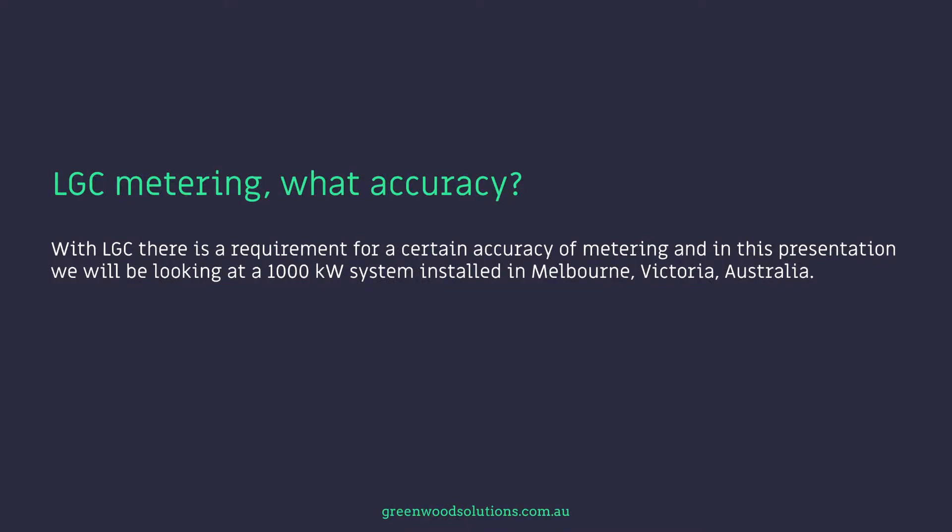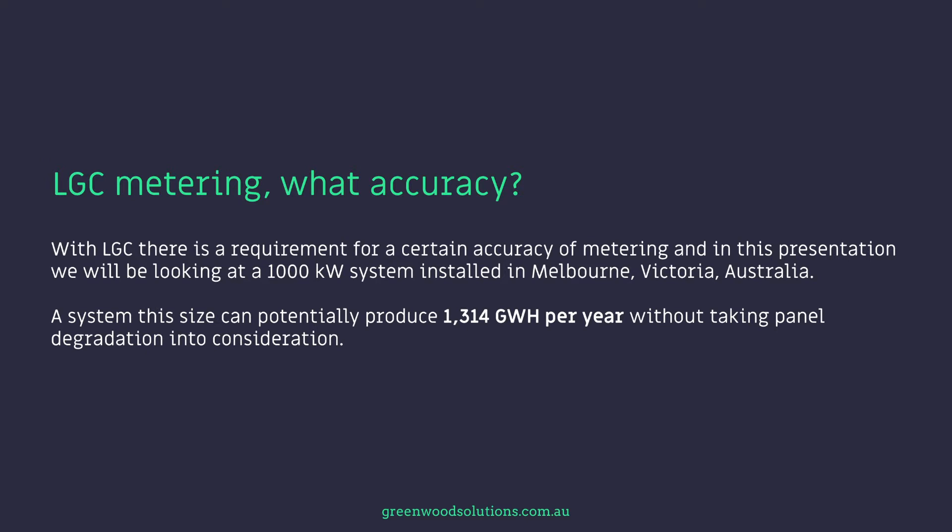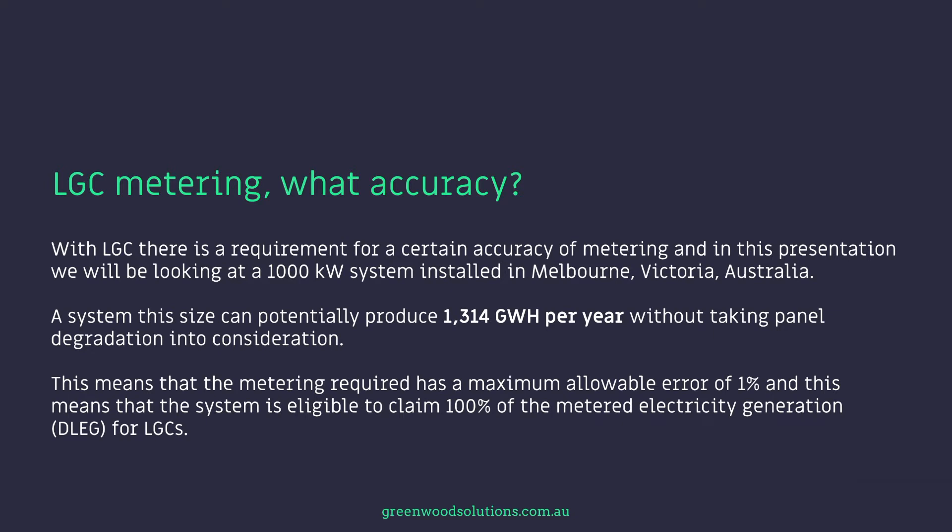Let's get stuck into it. With LGC systems, there is a requirement for a certain accuracy of metering. In this presentation, we'll be looking at a 1 megawatt or 1,000 kilowatt system installed in Melbourne, Victoria, Australia. A system this size can potentially produce 1,314 gigawatt hours per year without taking panel degradation into consideration. This means that the metering requires a maximum allowable error of 1%, and that the system is eligible to claim 100% of the metered electricity generation — DLEG — for the LGCs.